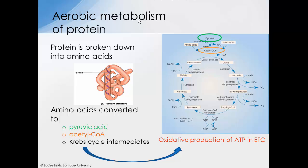Another key point is that amino acids, like fatty acids, can only be broken down aerobically — and that's why they require the mitochondria and also oxygen. So glucose can be broken down both anaerobically and aerobically, but fatty acids and amino acids can only be metabolised aerobically.